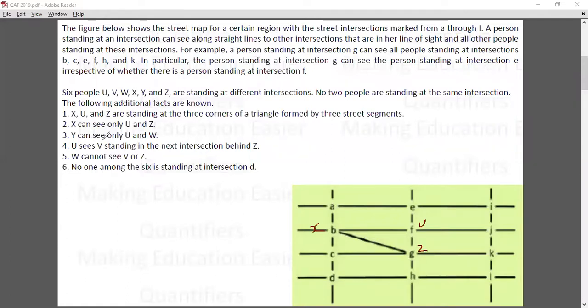Y can see only U and W. X can see only U and Z. Y can see only U and W, so U here, and Y can see W also. Which means Y here and W here.